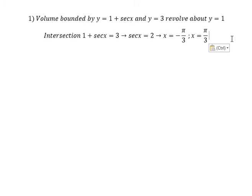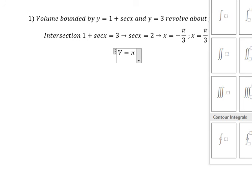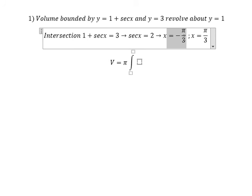Next, we can create the volume. It equals π and we have the interval from negative π over 3 to π over 3.